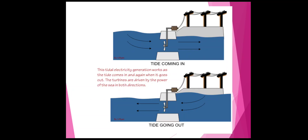This is a horizontal axis underwater windmill. As you can see from the figure, tides coming in and tides going out. This tidal electricity generation works as the tides come in and again when they go out. The turbines are driven by the power of the sea in both directions.